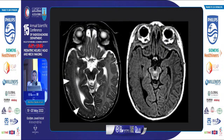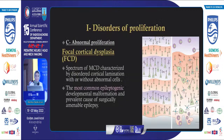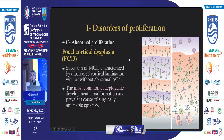Another case shows a focal form of hemimegalencephaly affecting the right temporal-occipital region, also referred to as focal or dysplastic hemimegalencephaly. If the disorder of proliferation is focal, it will result in focal cortical dysplasia.